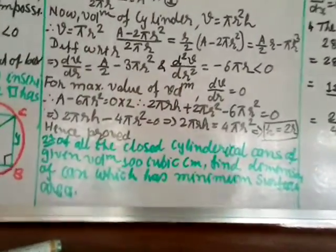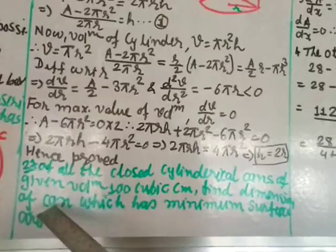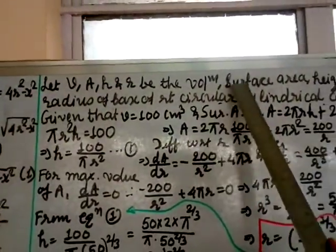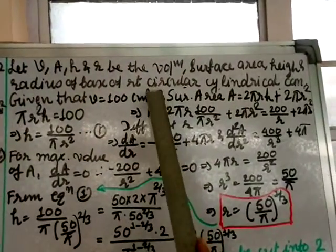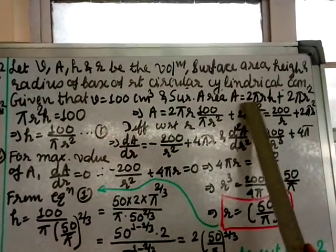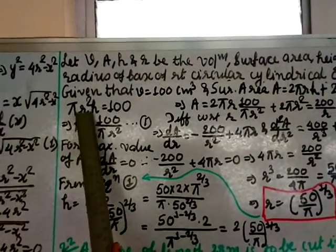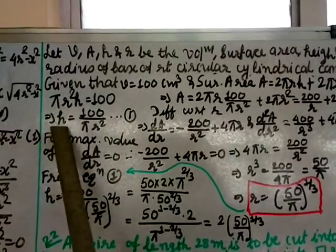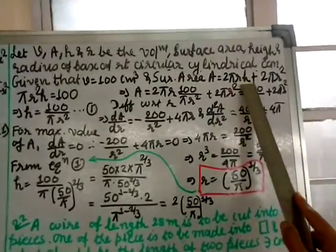Question 21: Of all closed cylindrical cans of given volume 100 cubic centimetres, find the dimensions of the can which has minimum surface area. Let V, A, h, and r be the volume, surface area, height, and radius of the base of the right circular cylindrical can. Given that V = 100 cm³.